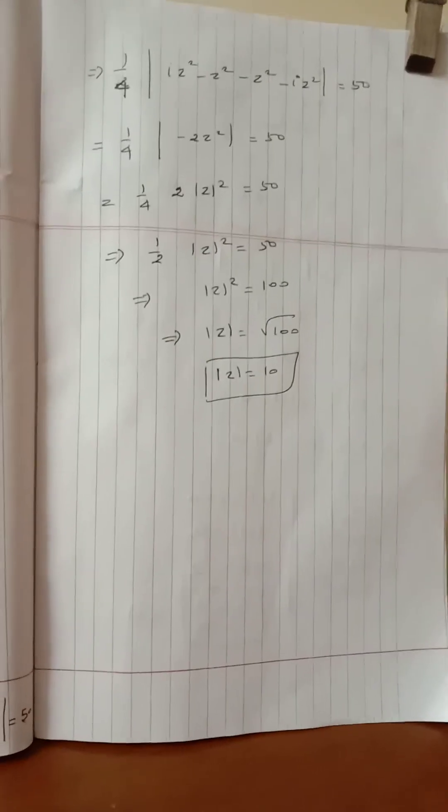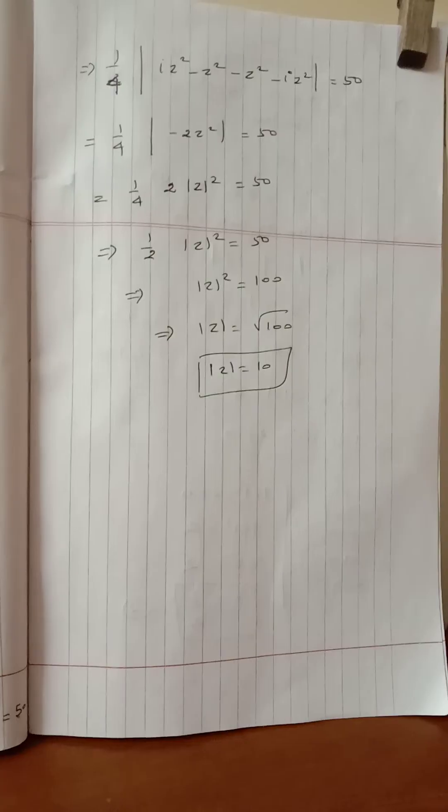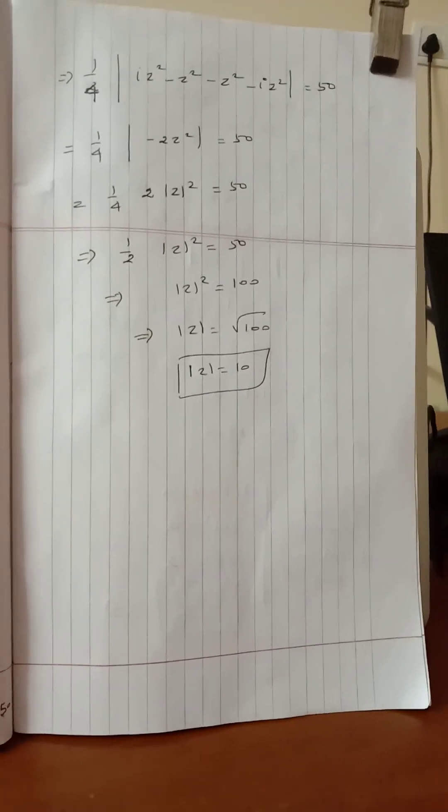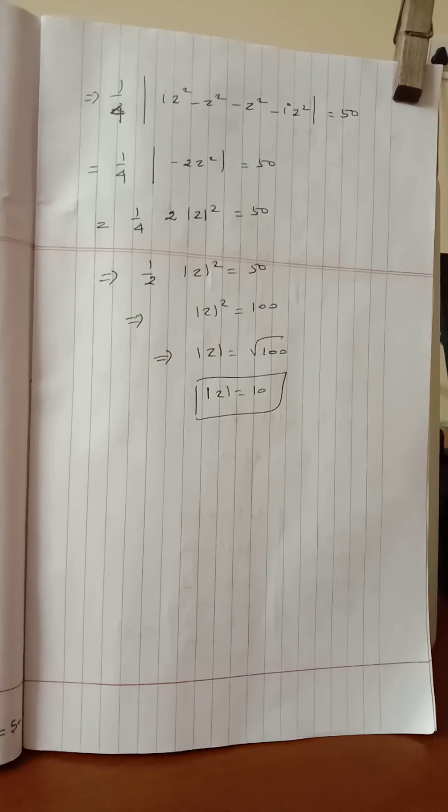Modulus of minus 2z square equals 50. 1/4 into modulus of negative value is positive, so modulus of minus 2 is plus 2 times modulus of z square equals 50.